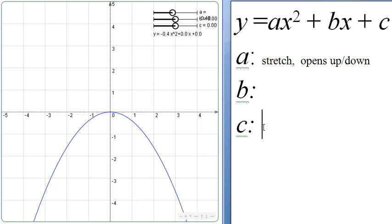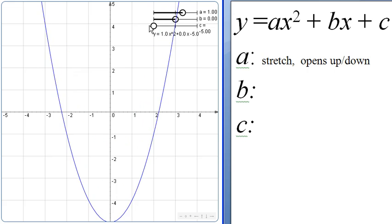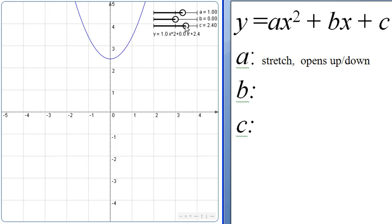So let's jump to c. So c, if I reset this back to a basic x squared, notice what happens if I change the value of c. The graph is simply sliding up and down.